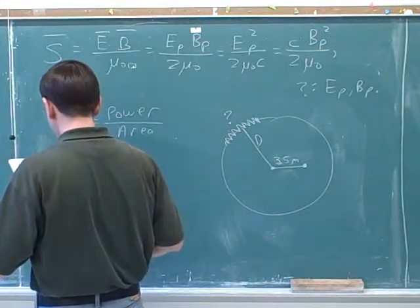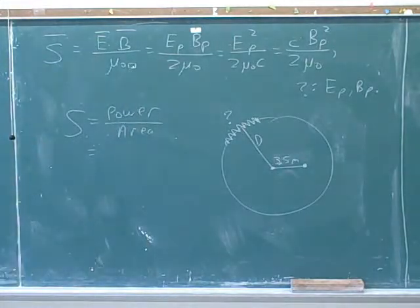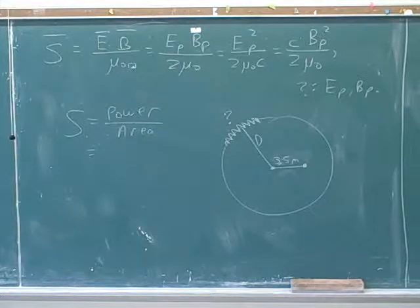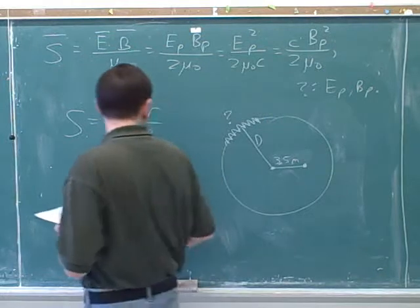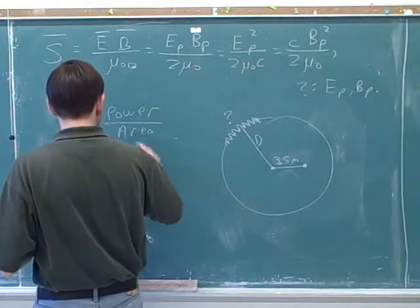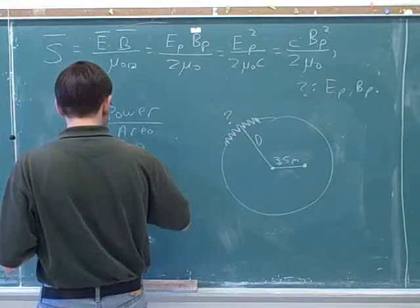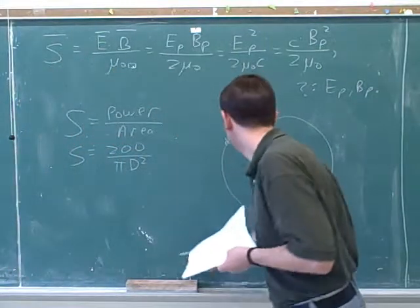So the power here — did we already have a formula for that? Yeah, what was our formula? We can just plug in for d over there: 200 over pi d squared. So we can just use our 200 over pi d squared. We already got this formula in the previous part.